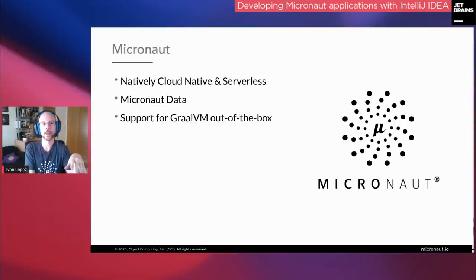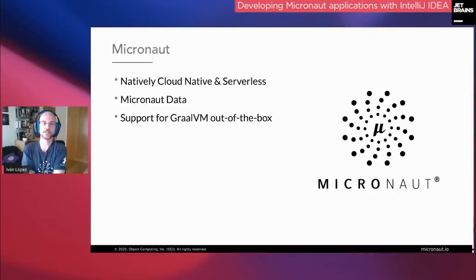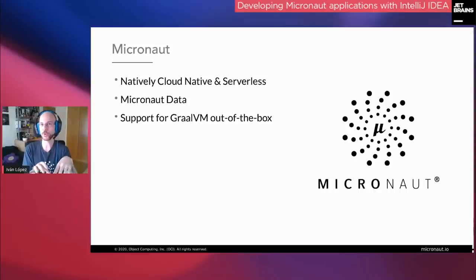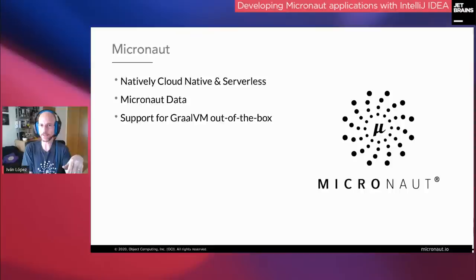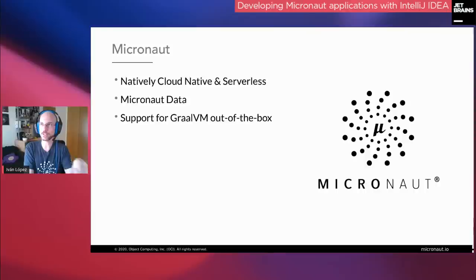We also have out-of-the-box support for GraalVM native images from Oracle Labs. A native image converts your Java application into a binary for your target platform — Linux, Windows, or Mac — with no dependency on the JVM. It starts really fast; an application can start in around 20-25 milliseconds, and memory consumption is very low. We've had GraalVM support since version 1.0, about two years ago, and we improve it with every new release.